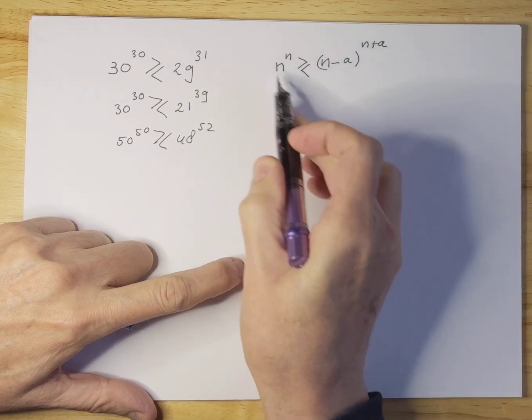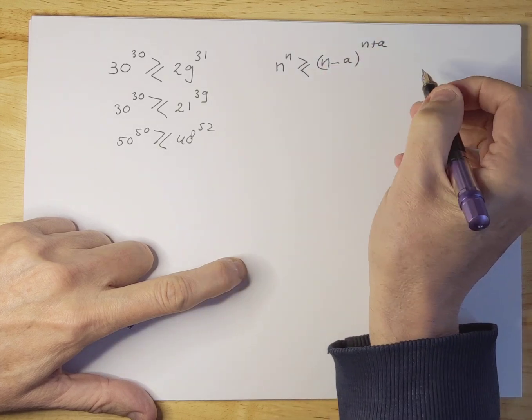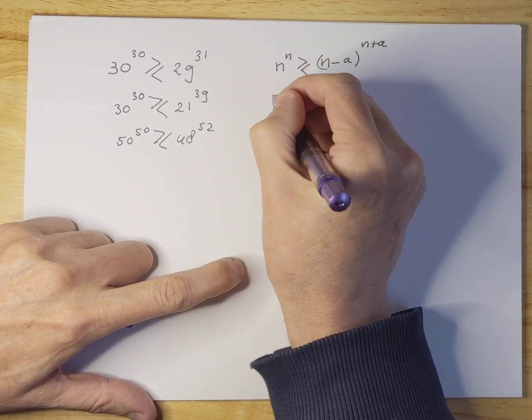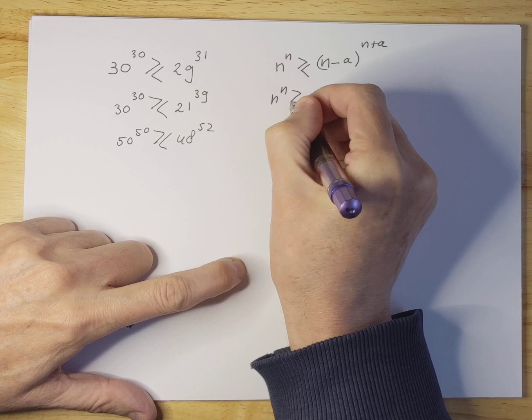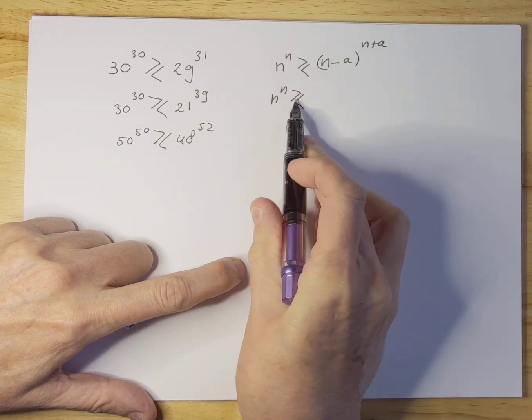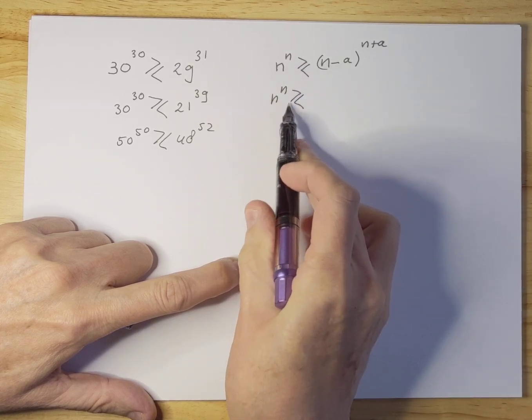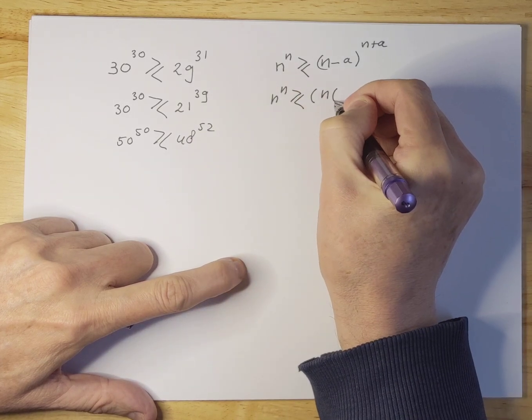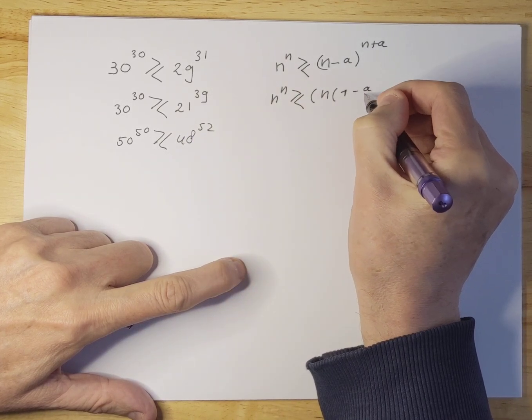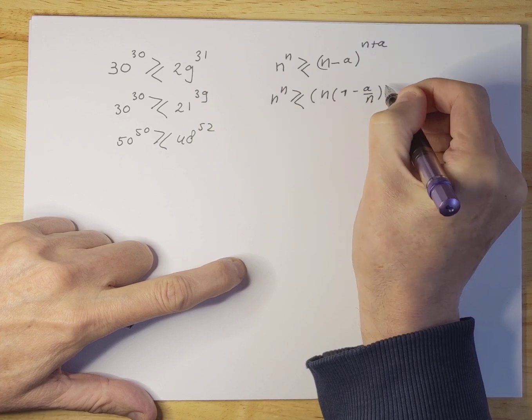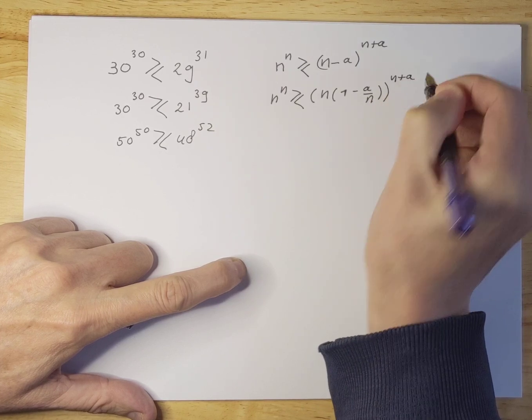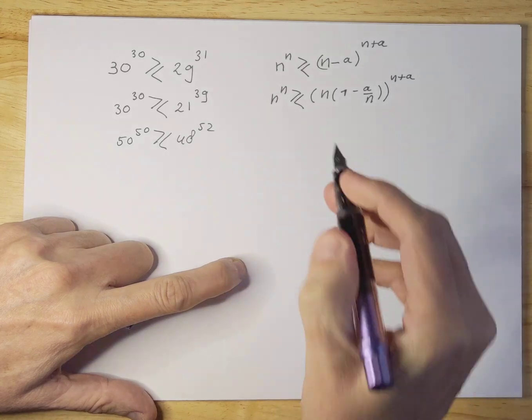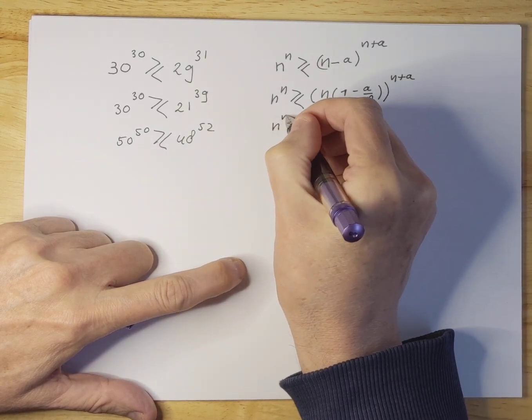If we do this we can simplify this a little bit and we can rewrite this into the following. I still don't know which one is bigger or smaller so I'm going to leave both in there and I'm going to isolate n and take that one out. We're going to rewrite it as such. Now we're going to rewrite it as follows.